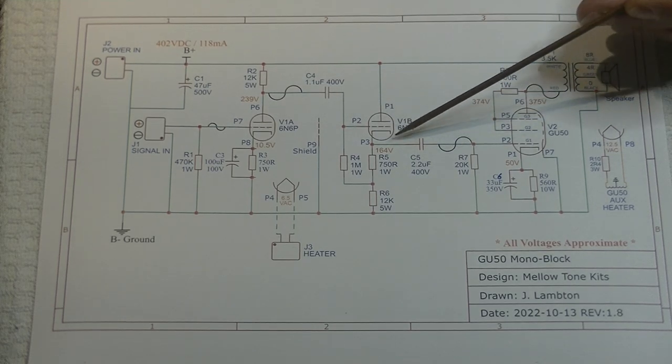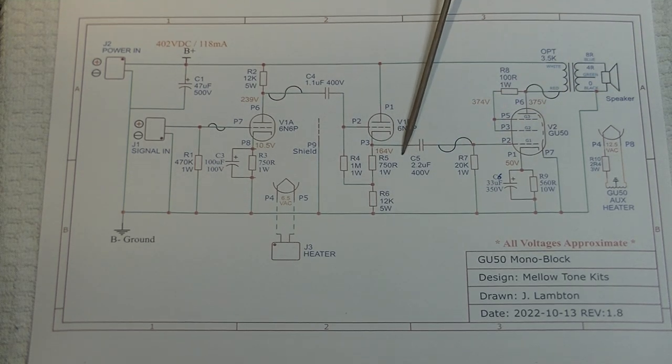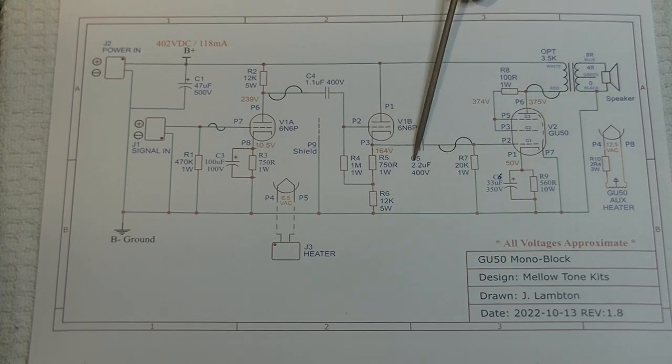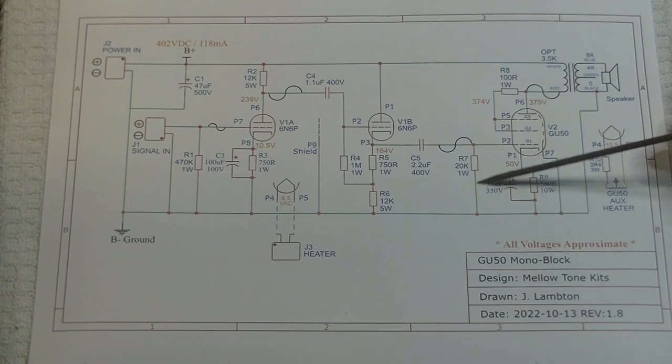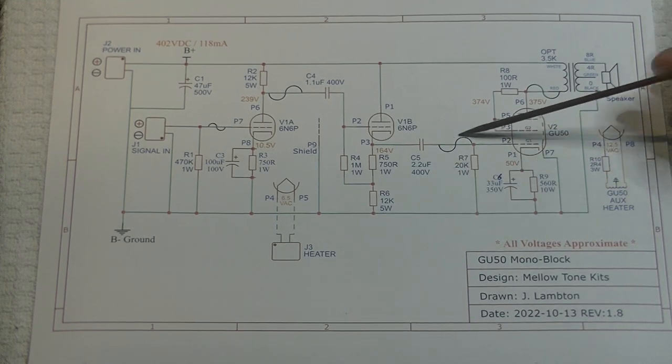So the same signal is down here. We need another coupling capacitor, C5. So now we block the DC. Our AC comes across. We have another bleeder, 20K in this case. That's what worked best in this circuit.